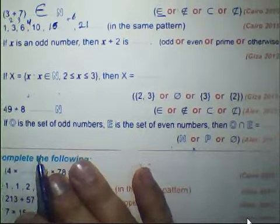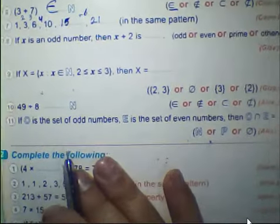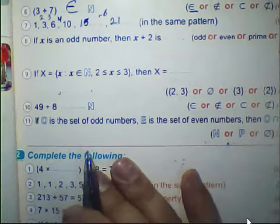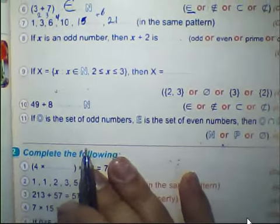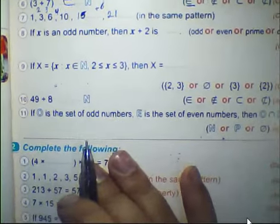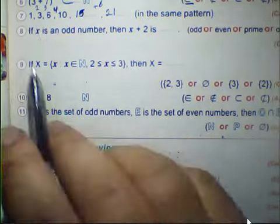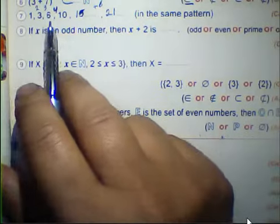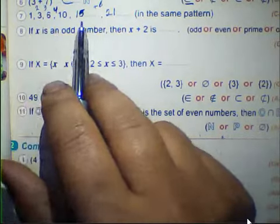So you must write 15 and 21. Again, the sequence is: 1, 3, 6, 10, 15, 21.